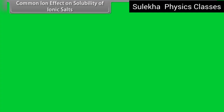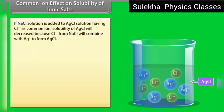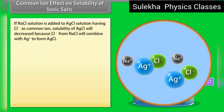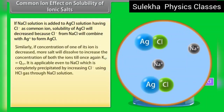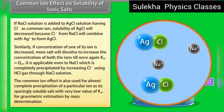Common ion effect on solubility of ionic salts: if NaCl solution is added to AgCl solution, Cl− is the common ion. Solubility of AgCl decreases because Cl− from NaCl combines with Ag+ to form AgCl. Similarly, if the concentration of one ion is decreased, more salt will dissolve to increase the concentration of both ions until Ksp = Qsp again. This is applicable even to NaCl, which is completely precipitated by increasing Cl− using HCl gas. The common ion effect is also used for almost complete precipitation of a particular ion as its sparingly soluble salt with very low Ksp, for gravimetric estimation by mass determination.